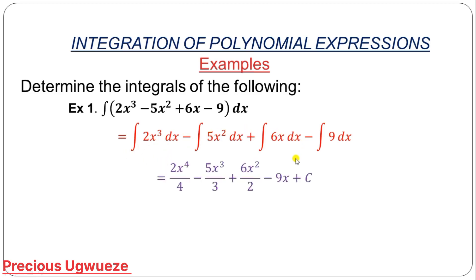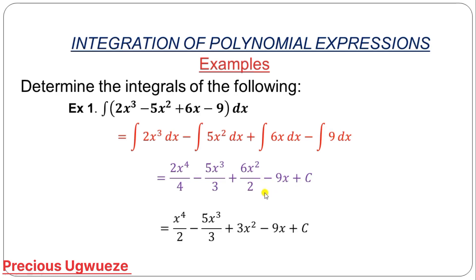In Example 1, we add 1 to 3 to get 4, then divide by the new power 4. Next we have 5x raised to the power 3 over 3. The power of x here is 1, so add 1 to get 2, all over 2. Whenever you integrate a constant, you just attach x to it, then add the constant of integration C. Simplifying: 2 over 4 reduces, and 2 cancels to give 6 over 3, which simplifies to give the final answer.